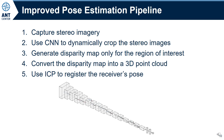This gives us the improved stereo vision pipeline shown here. As before, we first capture the stereo image pair. Next, we use our custom CNN to dynamically crop the stereo image pair. We then only generate a disparity map and 3D point cloud for the region of interest where the receiver is located, and register its pose using ICP.